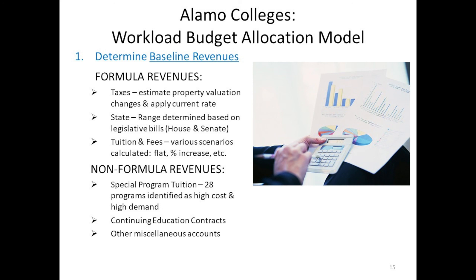Non-formula items are things tied to restricted purposes — not general discretionary. For instance, we have about 28 special programs that are very high-cost, with high equipment or stipends for faculty. For those programs, we actually charge a special tuition rate on top of the regular rate. If we're not going to be able to pay for the program otherwise, that money is provided directly to whichever college is offering the program. So it becomes non-formula: the revenue estimate equals the expense, allowing them to have the instruction and equipment needed to support that program.